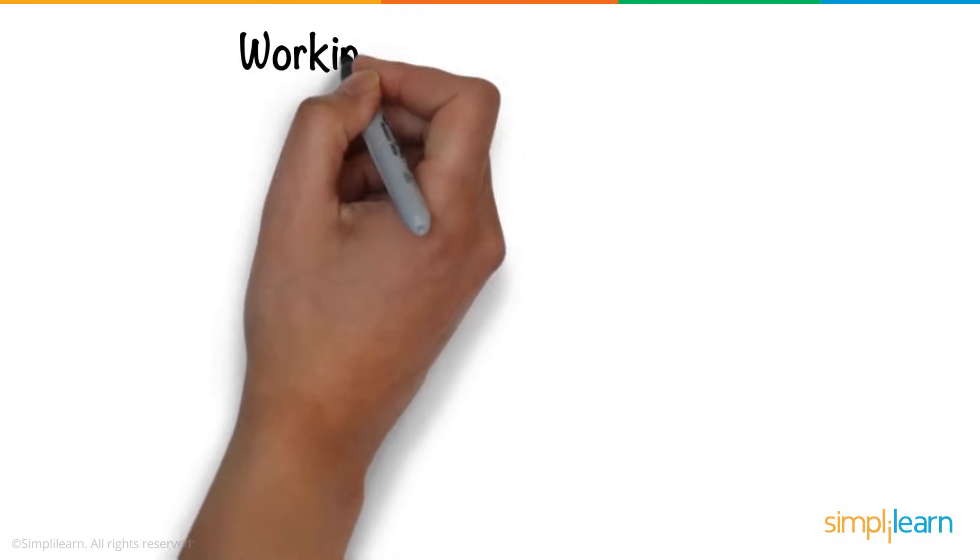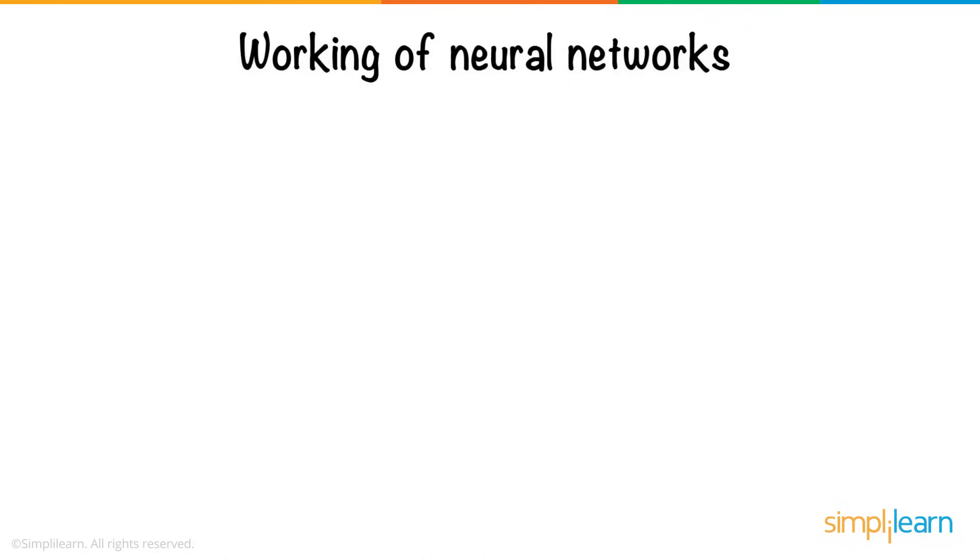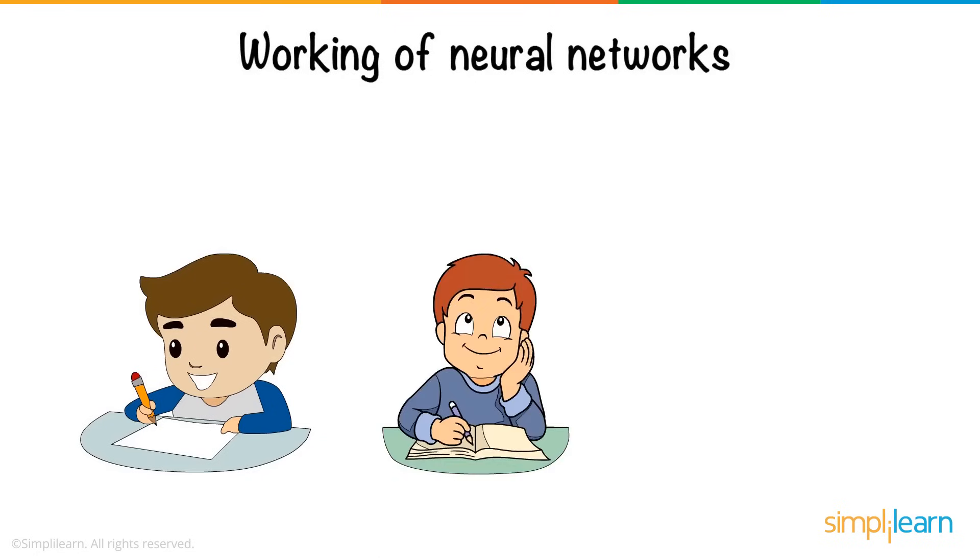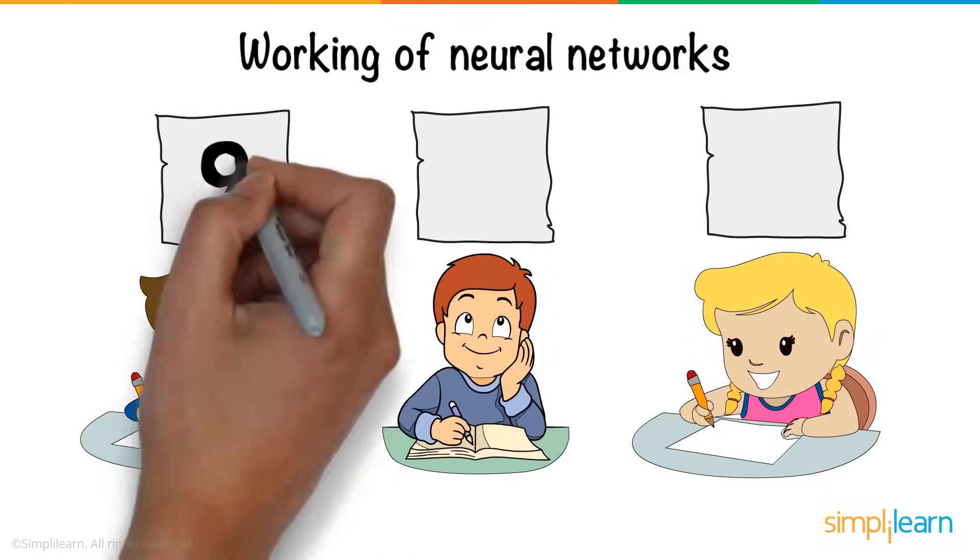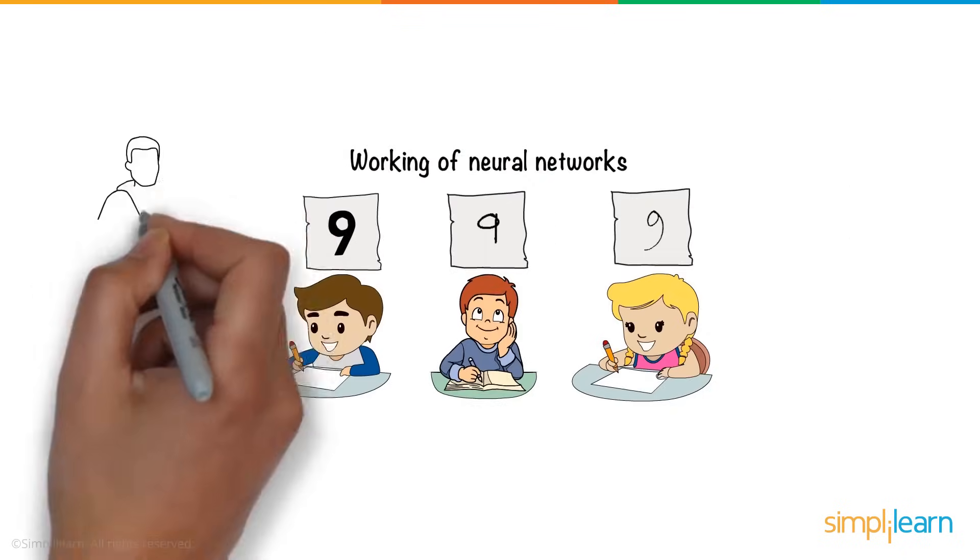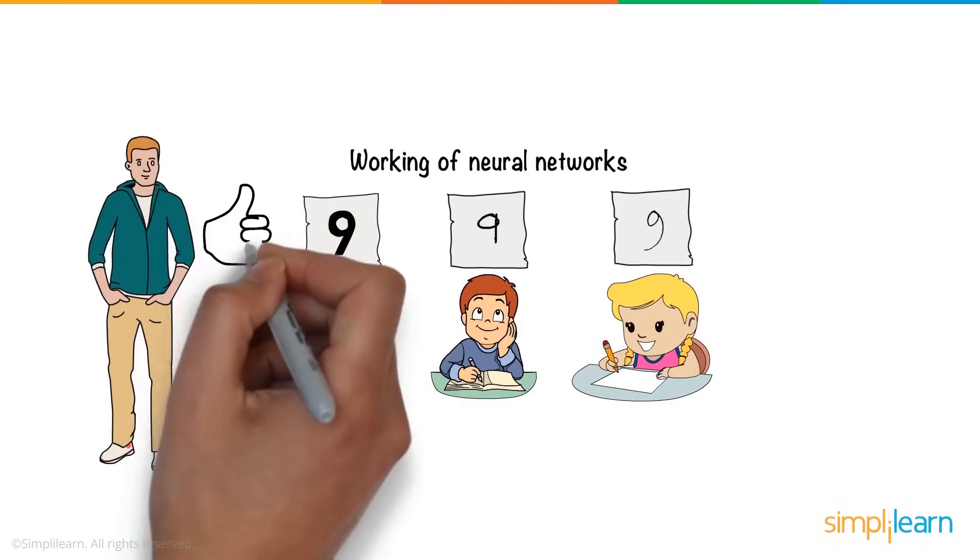Now, let's dive into the working of neural networks. Here, we have three students. Each of them write down the digit 9 on a piece of paper. Notably, they don't all write it identically. The human brain can easily recognize the digits.